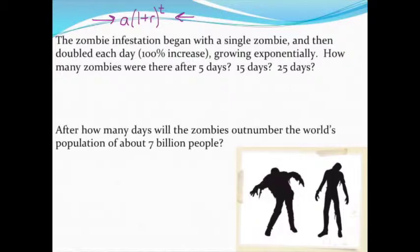So let's go ahead and take a look at this example and get some numbers plugged in there into our model. So we're starting with a zombie infestation, always a good way to represent exponential growth. And it says the zombie infestation began with a single zombie. So there's some important information that tells me my initial value, the A, is going to be 1 in this case.